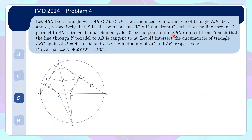Similarly, let Y be the point on line BC different from B such that the line through Y parallel to AB is tangent to ω. The point Y and this line are parallel to AB and tangent to the incircle. Let AI intersect the circumcircle of triangle ABC again at P, not equal to A. We also let K and L be the midpoints of AC and AB respectively. We are supposed to prove that angle KIL plus angle YPX equals 180 degrees.